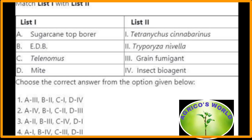Sugarcane top borer is Tryporyza nivella. Ethylene dibromide is a grain fumigant. Telenomus is an insect bio-agent. The mite is Tetranychus cinnabarinus. So here the answer is the third option.